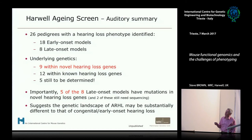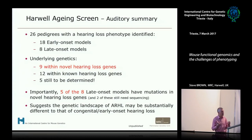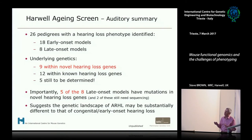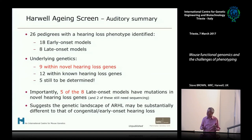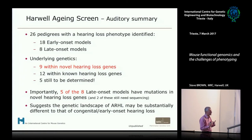As a summary: we got 26 pedigrees with a hearing loss phenotype — 18 early-onset models and 8 late-onset models. Overall, we found nine novel hearing loss genes that had never been associated with hearing loss before. Most of the late-onset models have mutations in novel hearing loss genes. That was very surprising to us — it suggested that the genetic landscape of age-related hearing loss or presbycusis is very different from the genetics underlying congenital or early hearing loss.